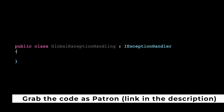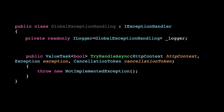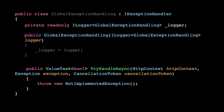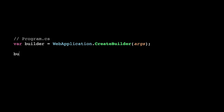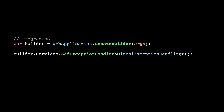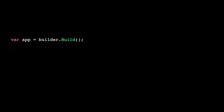Let's create a class GlobalExceptionHandling and implement the interface. First, I think it would be nice to log the exception, so let's create a field and initialize it through the constructor, and log the exception using the trace ID. Now we need to register this exception handler, otherwise .NET doesn't know that this exists. So let's go to the program.cs and add it to the service collection. And as always, adding it to the service collection isn't enough — let's tell the application that it should use the exception handlers.